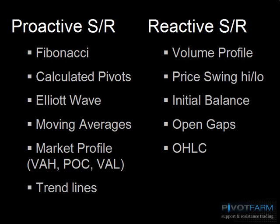On the flip side we have proactive support/resistance, which is based upon price but is more derivative of price. This cannot be demonstrated any more clearly than with calculated pivots — pivot points that use the open/high/low/close of a particular day and, using a formula such as Woodies, Camarilla, or DeMark, create certain support and resistance levels. These are all mathematically derived. The same applies to Fibonacci, Elliott Wave, moving averages, market profile levels, and trend lines — all derivatives of price and therefore proactive forms of support/resistance.